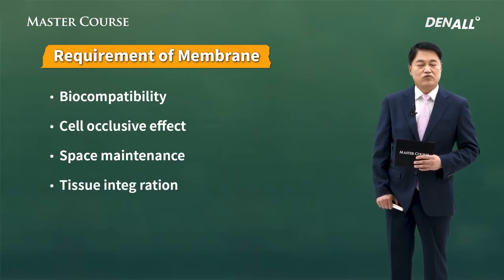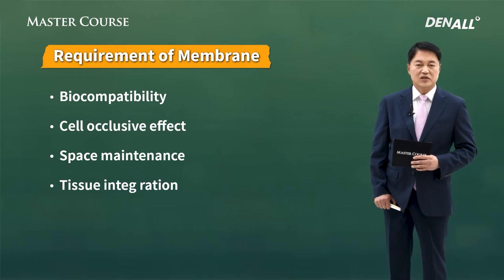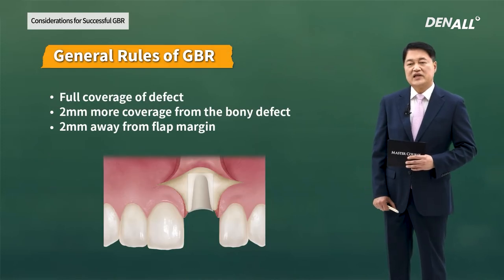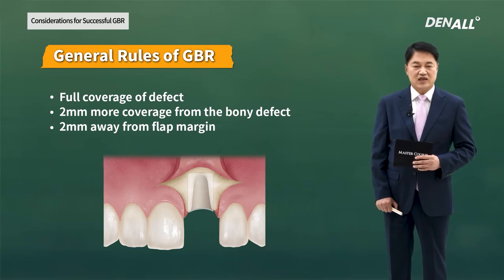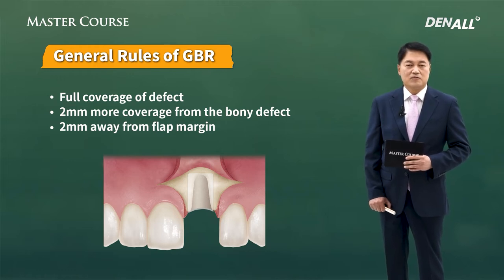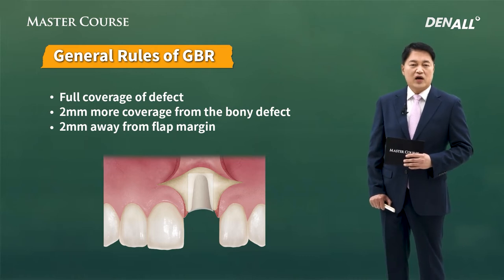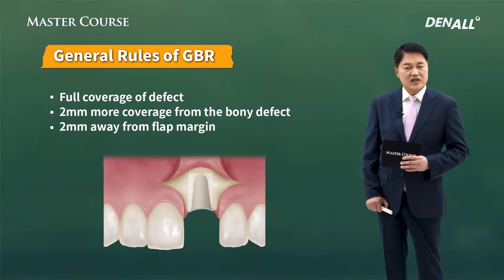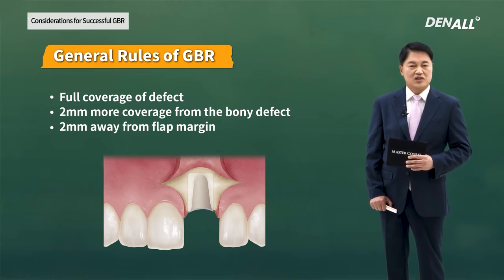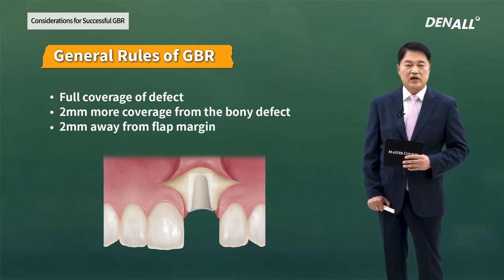The membrane also needs tissue integration — it needs to integrate with adjacent tissue and stabilize the wound, and it should be easy to manage. This is an image that we should remember when doing GBR. In gray is the bone defect, and the white part is the membrane. The membrane should fully cover the defect and cover over 2 mm of the bone defect. It should not interfere with primary wound coverage and should be slightly apart from the flap margin.